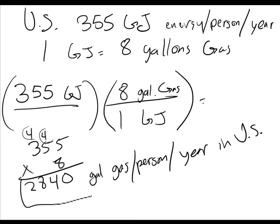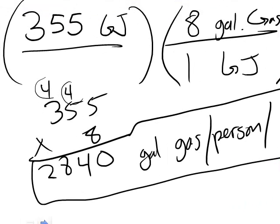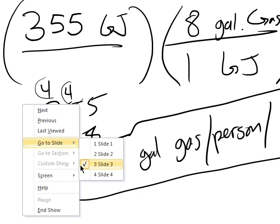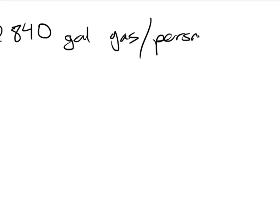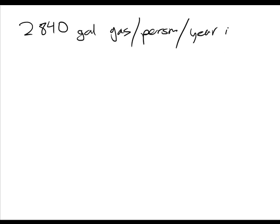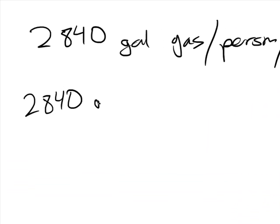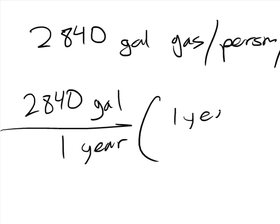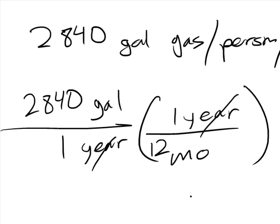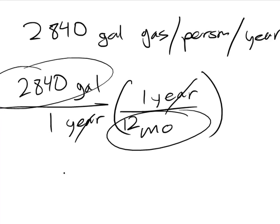That would be our answer. So now if we wanted to figure out how many gallons of gas per month, a solution for that would be, so we had 2840 gallons of gas per person per year in the U.S. So we say, well that's 2840 gallons per year. We want to convert to months. One year has to go on top so that the units cancel out. Months on the bottom, it takes 12 months. So we need to take 2840 divided by 12.